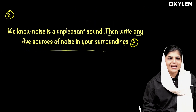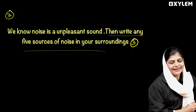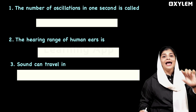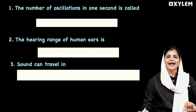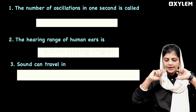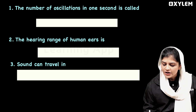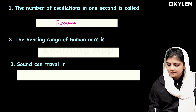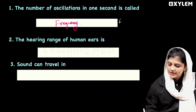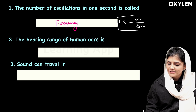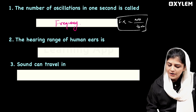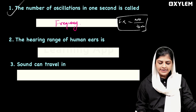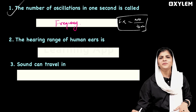Next question: The number of oscillations in one second is called frequency. Frequency equals number of oscillations divided by time. This is a very important question — the number of oscillations in one second is called frequency.